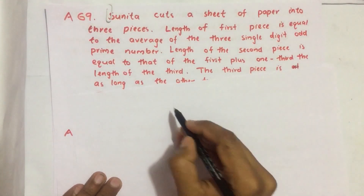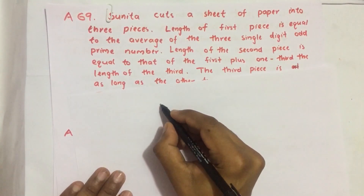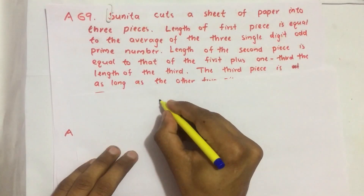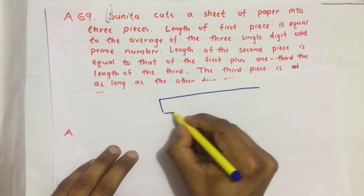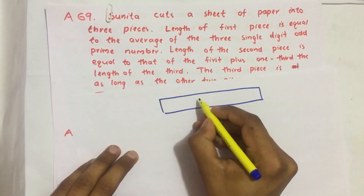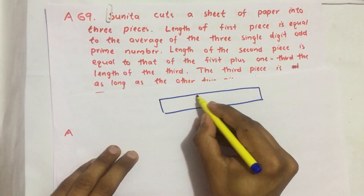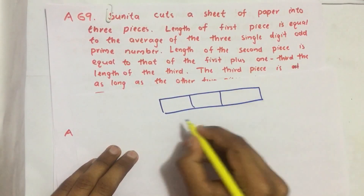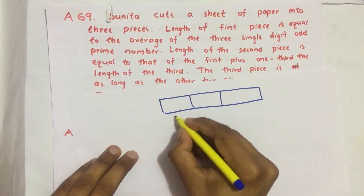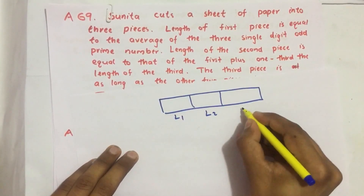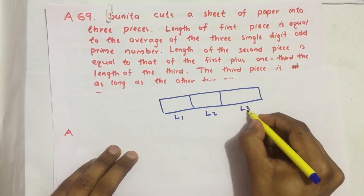Here Sunita has a long paper. She cuts it into three parts. Let us name them L1, L2, and L3.